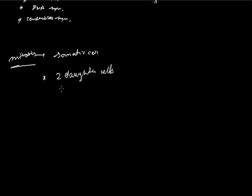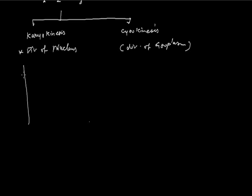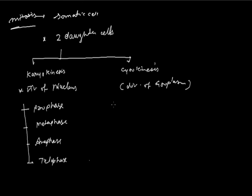The process of mitosis occurs in two stages: the first stage is karyokinesis and the second stage is cytokinesis. In karyokinesis, division of the nucleus takes place. In cytokinesis, division of the cytoplasm takes place. Karyokinesis is further divided into four stages: prophase, metaphase, anaphase, and telophase. After karyokinesis, the process of cytokinesis takes place, where the division of cytoplasm occurs.